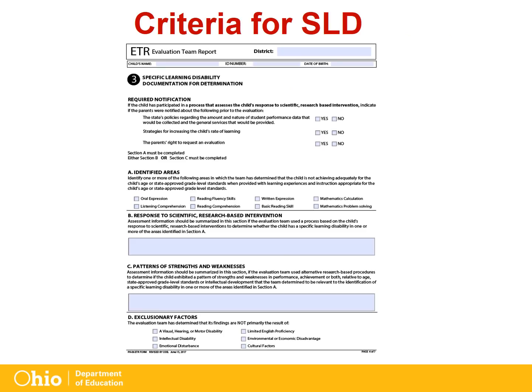Part 3A of the Evaluation Team Report identifies areas for specific learning disability. Identification in the category of specific learning disability requires that the child does not achieve adequately for the child's age or to meet state-approved grade-level standards in one or more of the following areas when provided with learning experiences and instruction appropriate for the child's age or state-approved grade-level standards. These areas include oral expression, listening comprehension, reading fluency skills, reading comprehension, written expression, basic reading skill, mathematics calculation, or mathematics problem solving.